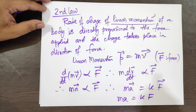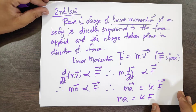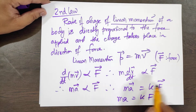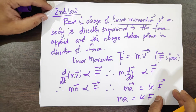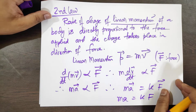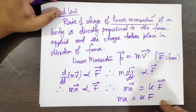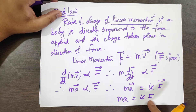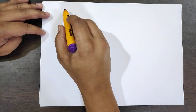In scalar form we can write m·a equal to k times F, because a and F are in the same direction. When a vector is multiplied by a scalar, the direction does not change. So m·a equals k·F. Now we will make k equal to 1.